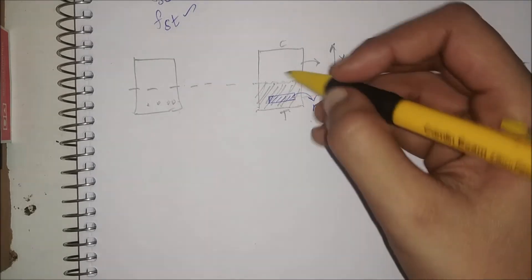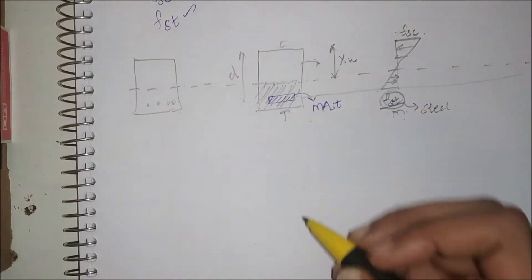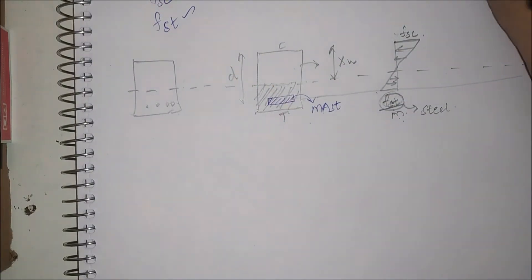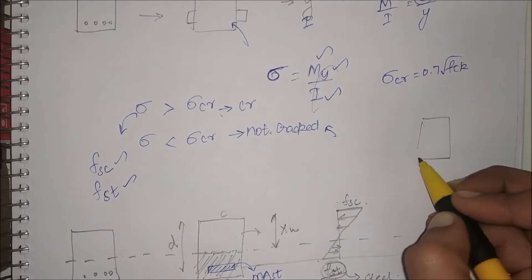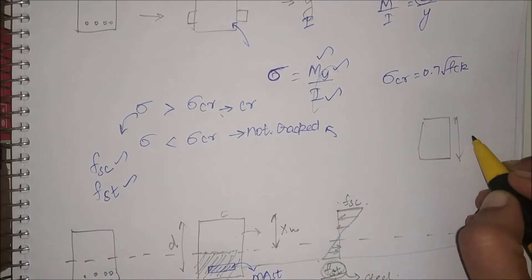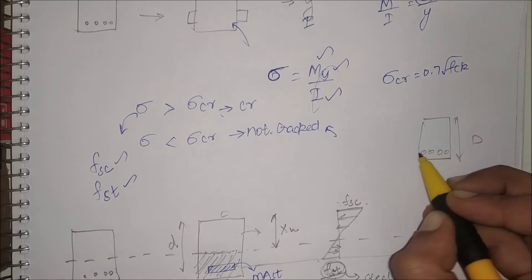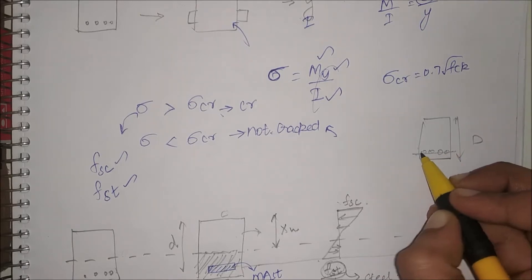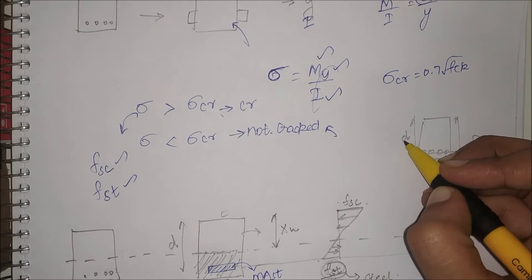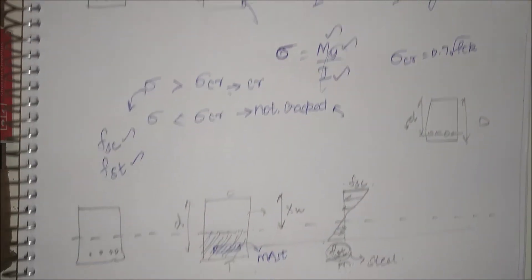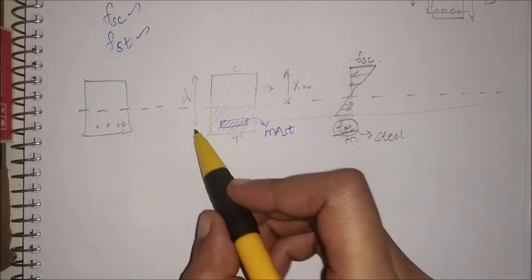This whole distance is going to be the effective depth d. So if this is our section, the whole depth is D, and until the center of the bars this one is called small d — that is the effective depth. Everywhere we will consider effective depth only.